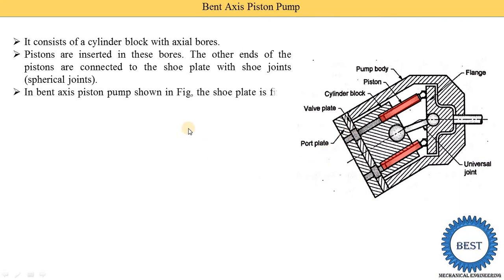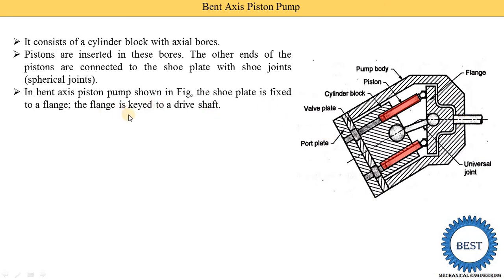In the bent axis piston pump shown in the figure, the shoe plate is fixed to the flange and the flange is keyed to the driver shaft — meaning the shoe plate and flange are together. The flange is keyed to the driver shaft means they are connected using a key joint: one slot is made on the driver shaft and the flange is fitted into that slot.